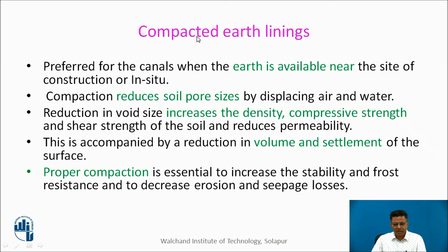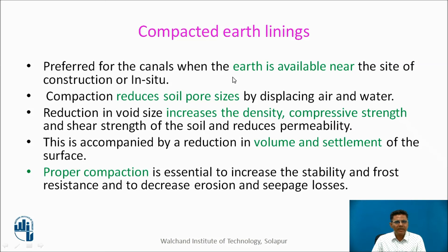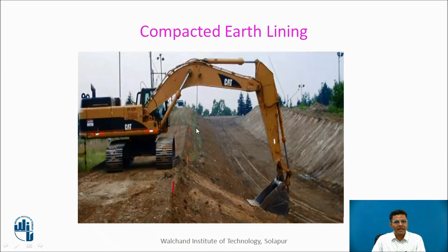Another form is compacted earth lining, seen here. It is preferred when earth is available near the site or in situ. Compaction reduces soil pore sizes, thus increasing density and compressive strength. It reduces volume and settlement, and proper compaction is essential to increase stability and frost resistance of the earth lining. Earth is compacted using earth-moving machinery.